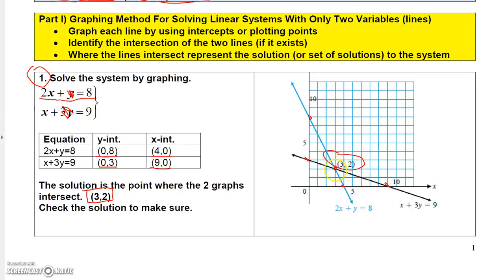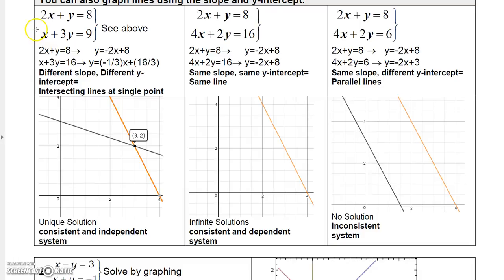Again, it is possible that this intersection might be maybe 3.1 for the x value and maybe 1.9 for the y value. You just never know. So that's one of the downfalls of solving systems by graphing. I just want to show you the three possibilities. If you solve a system with two equations and two unknowns, there's three possibilities. One, the two lines could intersect at a unique point. And if you get a unique solution, we call that a consistent and independent system.